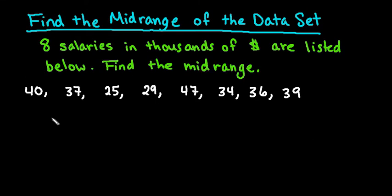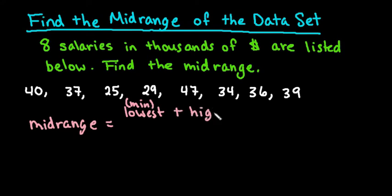And so what we're going to do is find the midrange. So the midrange is found by taking the lowest value or the minimum, you can call it either one, plus the highest value or the max, and dividing it by two. Basically what it is is the midpoint of your data set.